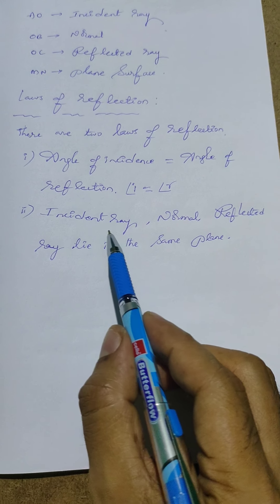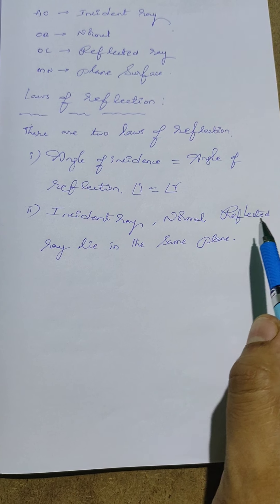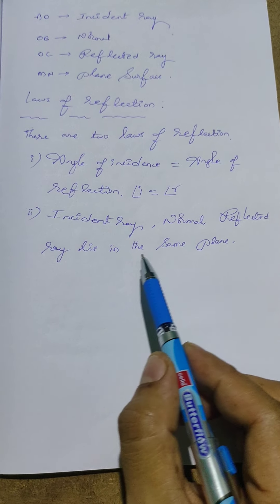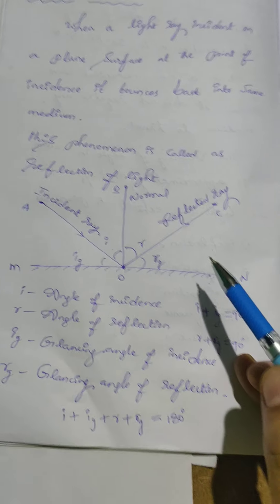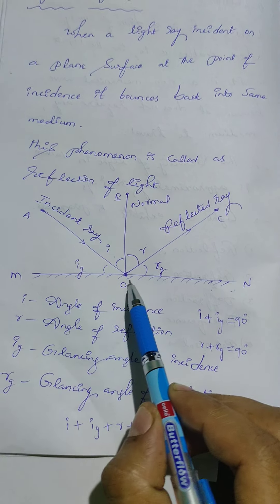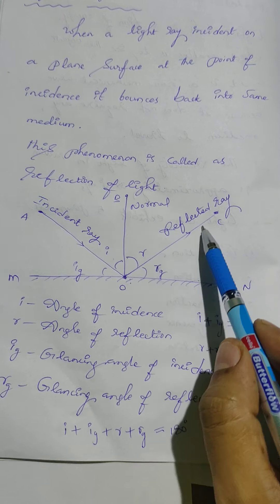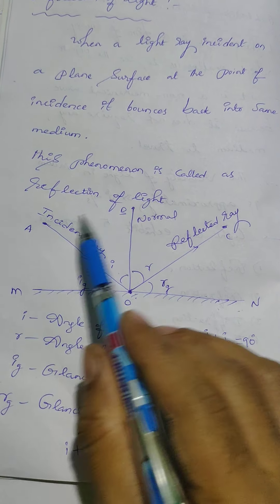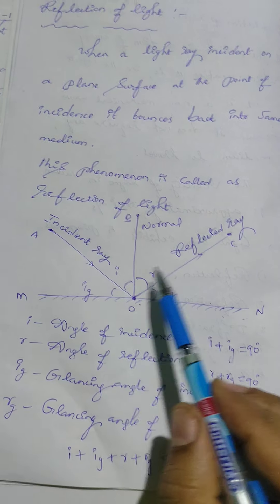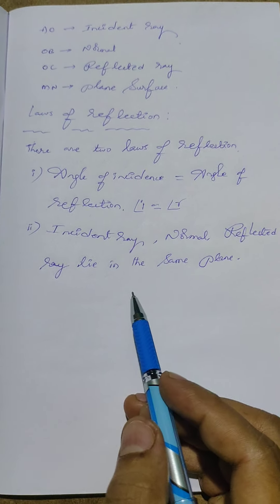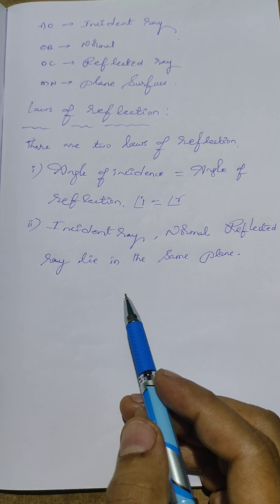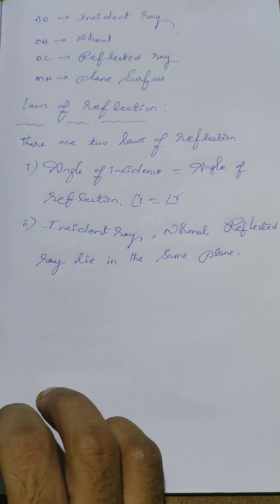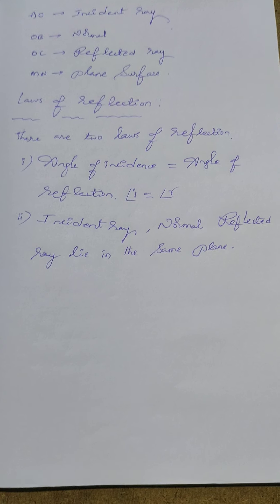And second law: incident ray, normal, reflected ray lie in the same plane. See here children, AO incident ray and OC reflected ray, OB normal, these three only lies on a same plane, not different planes. So these two are laws of reflection. So this is the brief introduction of reflection of light. Thank you.